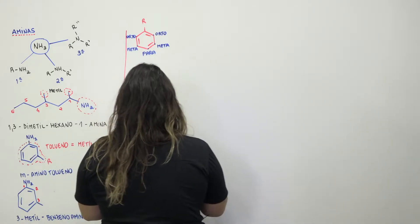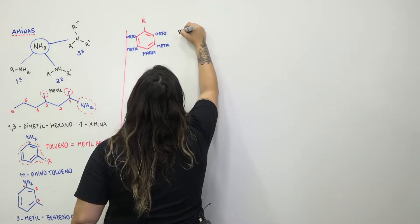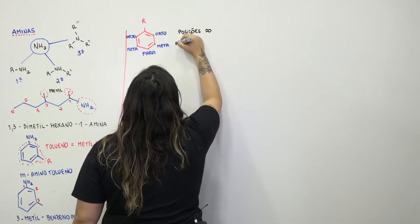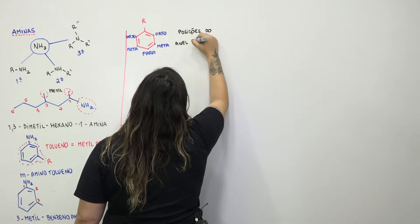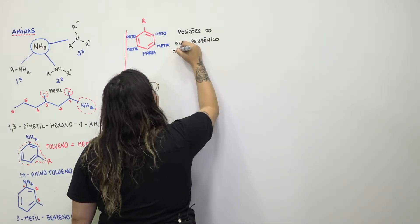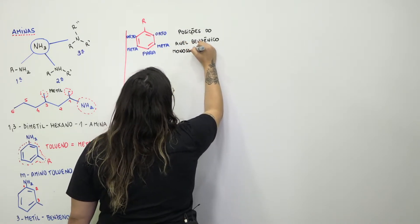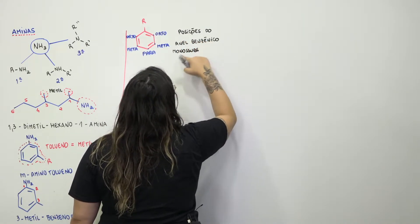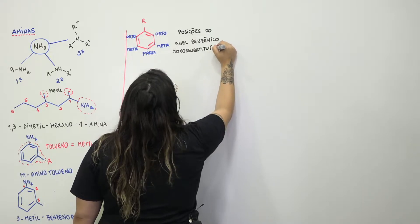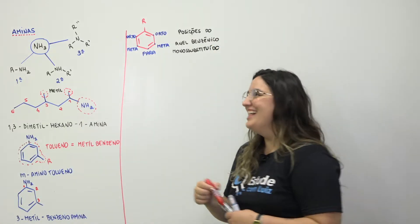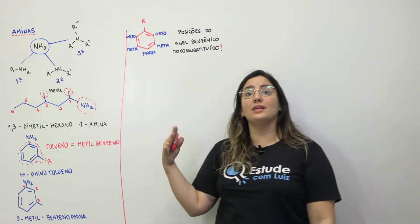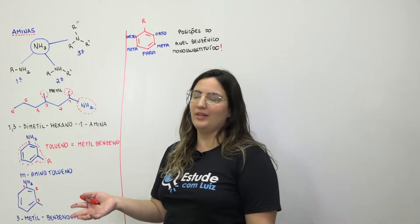Vou anotar aqui no cantinho as posições do anel benzênico. Vale destacar que estamos falando de um anel benzênico mono-substituído, que já tem alguém ligado a ele — não é o benzeno puro. Isso vai ser importante para vocês nos exercícios.